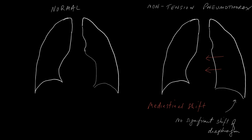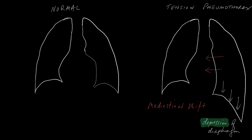In a non-tension pneumothorax, the patient has a collapse of the lung on the left side, there is some mild mediastinal shift, but the diaphragm is not really shifted. In a tension pneumothorax, the first thing that happens is depression of the diaphragm with all the other signs of pneumothorax. Eventually, because the pressure becomes so high, the diaphragm is everted — so instead of being concave downwards, it's now convex downwards.